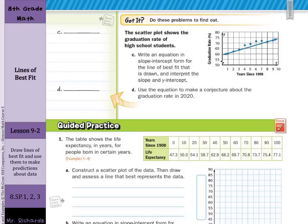And now as we look to solve this question on our own, the scatter plot shows the graduation rate of high school students, write an equation in slope intercept form for the line of best fit that is drawn, and interpret the slope and y-intercept. Let's pick two points off this line. Well, it looks like I have a point here at 1,60. And it looks like I have a nice intersection point right here at 4,65. And so the first thing I would like to do is to calculate the slope. So slope is equal to y2 minus y1 over x2 minus x1. So slope is equal to 65 minus 60 all over 4 minus 1, which is 5 over 3, which is 1.6 with that 6 repeating.